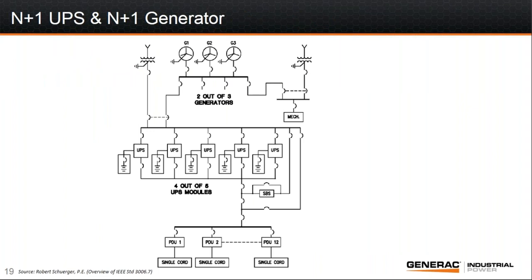Let's look at some generator-UPS data center configurations. A very low-end solution would have generators on a common bus in an N+1 scheme — some redundancy for the mechanical load and for the UPS load. In this configuration the UPS modules themselves are redundant, meaning one module could go down and we could still power the loads. The real weakness of this design is that the servers are only single-corded — the server has only one power supply flowing through one PDU, so there are single points of failure at the bottom end of this configuration.